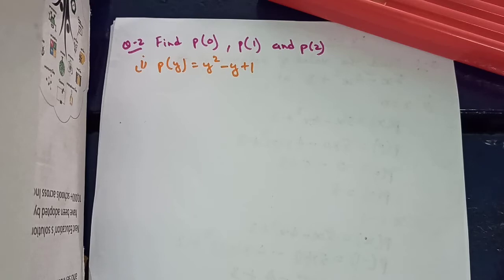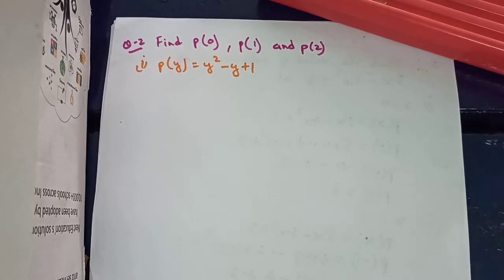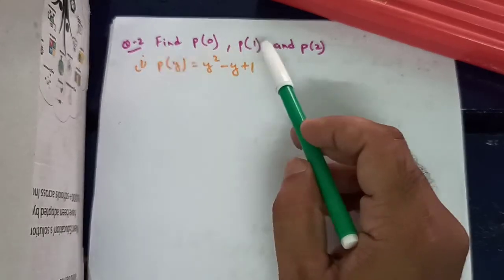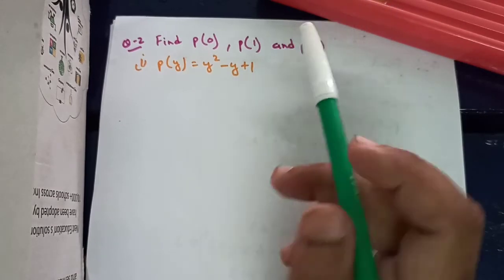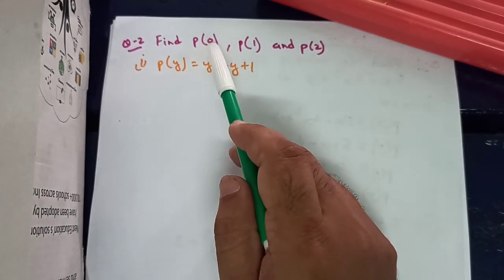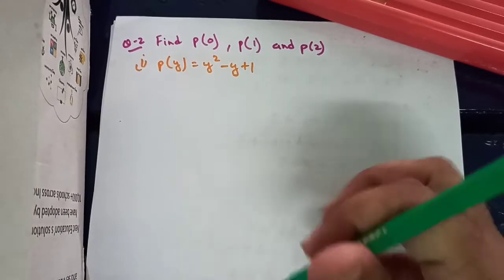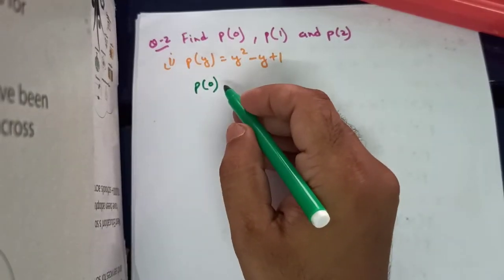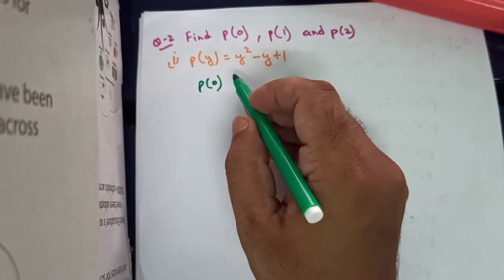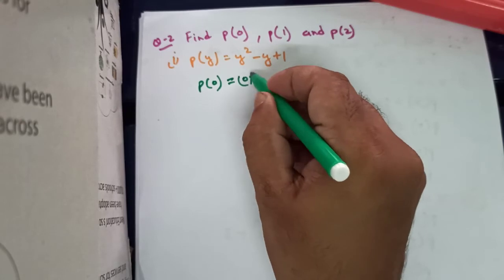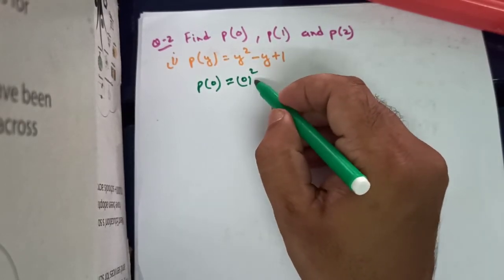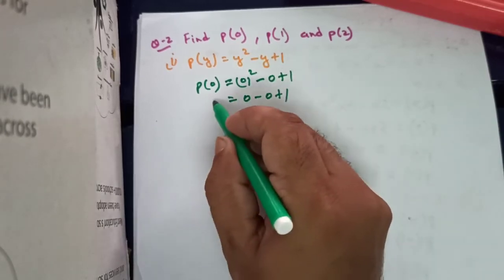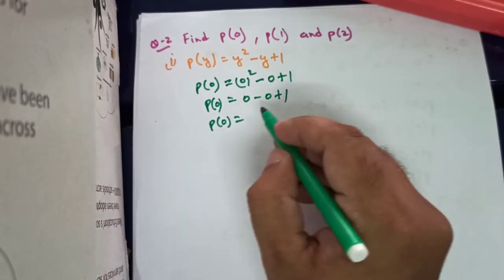The second question is similar but the language is different. Instead of saying 'find the value of the polynomial,' they have written 'find p(0), p(1) and p(2) of the given polynomial p(y).' We know that p(0) is the value of the polynomial at y equals 0. So p(0) equals 0 squared minus 0 plus 1. Square of 0 is 0, minus 0 plus 1, so the value of p(0) is 1.